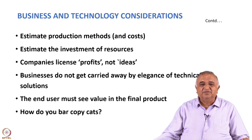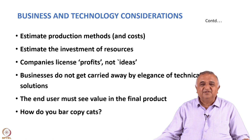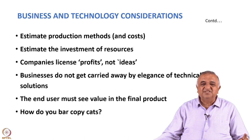We talked about scaling up, so we must estimate what the production methods are going to be. Are there going to be special production methods, special machinery? What will the cost of production be, and what investment is required to build those facilities? Remember, it is a business operation, so it has to make profits. Companies license profits — they do not license ideas.